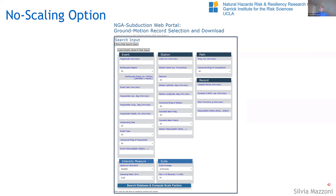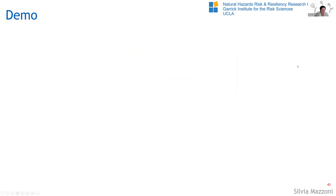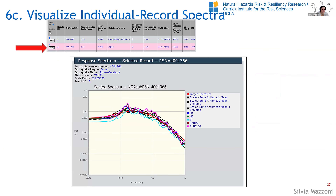There's another question about whether we can add the 5-75% significant duration in addition to the 5-95% duration search option. Yes — right now I've got the 5-95 duration option. I can add the 5-75. The more input options I put in, the more explanation that needs to be given. But in the output I give both quantities. A lot of this is you do initial searches in the portal, and then for advanced searches there's always the flat file with all the data. I can put that in my notes and will add it to the search criteria.